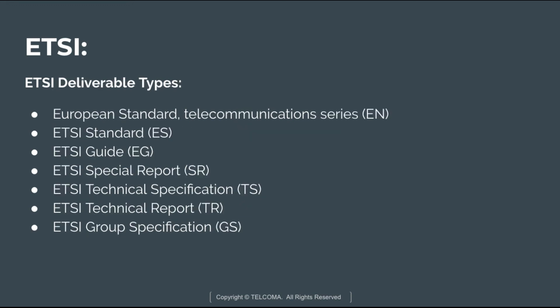The ETSI deliverable types include: European Standards Telecommunication series (EN), ETSI Standard (ES), ETSI Guide (EG), ETSI Special Report (SR), ETSI Technical Specification (TS), ETSI Technical Report (TR), and ETSI Group Specification (GS). In the ETSI technical working procedure, a draft specification approved and adopted by a Technical Committee (TC) is submitted to the ETSI secretariat, which publishes the TS, TR, or SR.